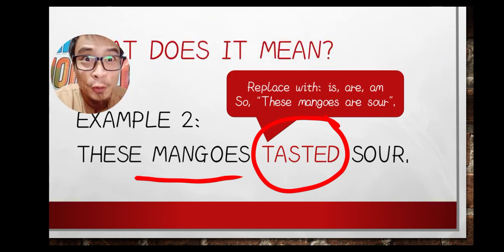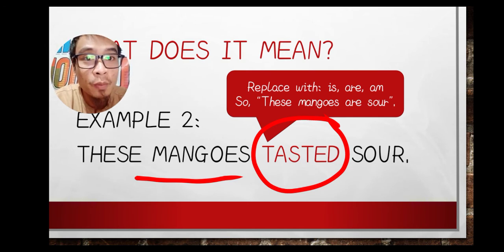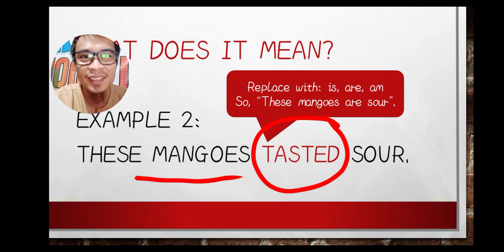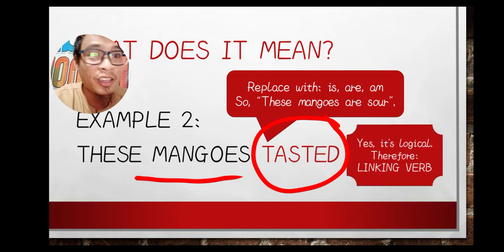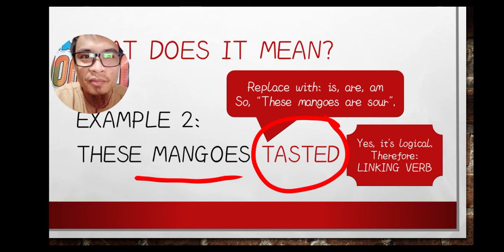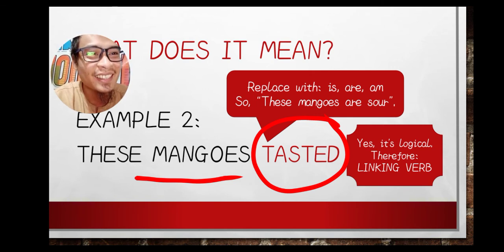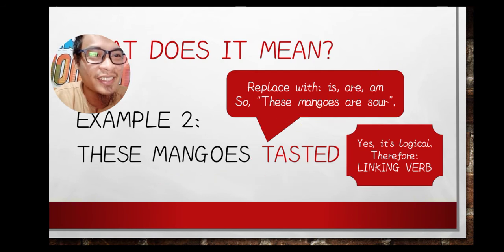We replace the verb 'tasted' with 'is' or 'are.' Since the subject is plural, the sentence becomes 'These mangoes are sour.' Ask yourself: is it logical? Yes, absolutely — it is logical. Therefore, 'tasted' is used as a linking verb.